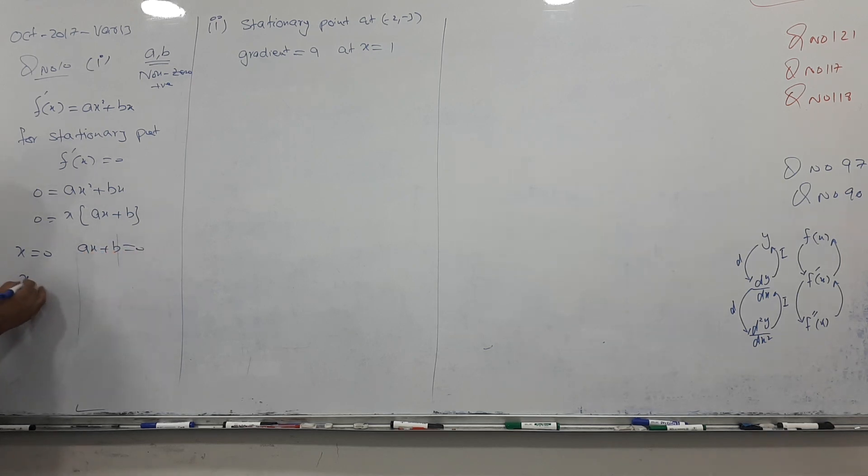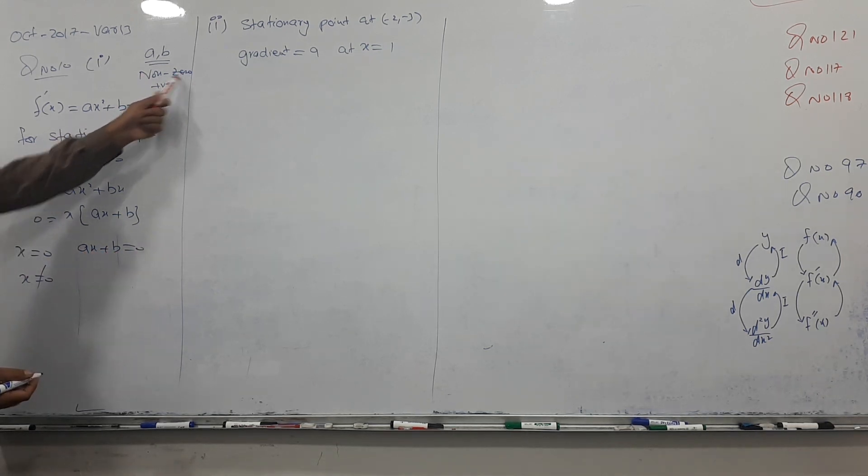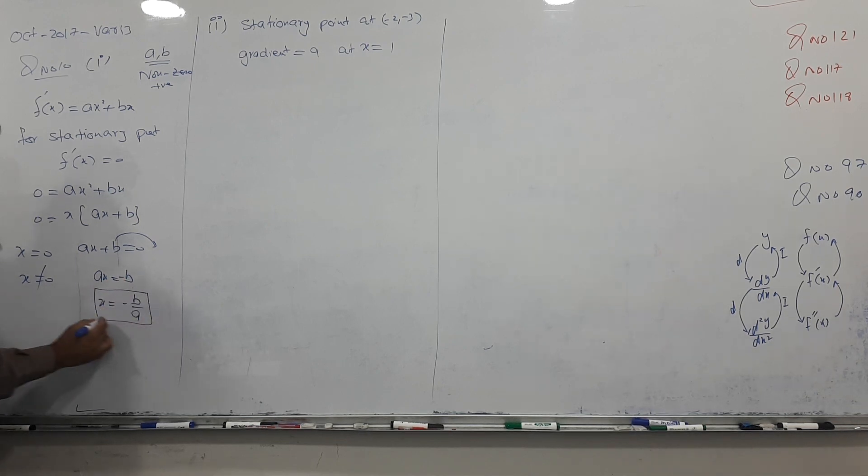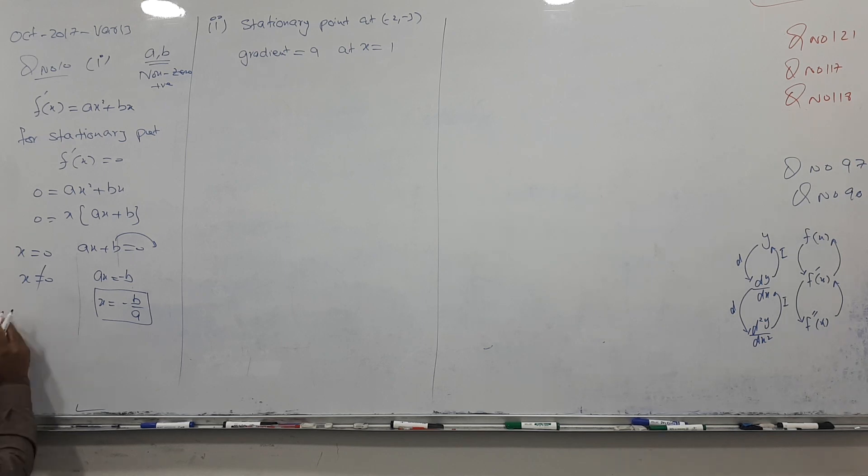So here x is 0, not possible, why not be, he said non-zero, so x cannot be 0. So this goes other end and this negative b, and x becomes negative b by a. So this is my answer, at the same time he's asking us nature. How to find nature, I will go for second differentiation, so let's find nature.